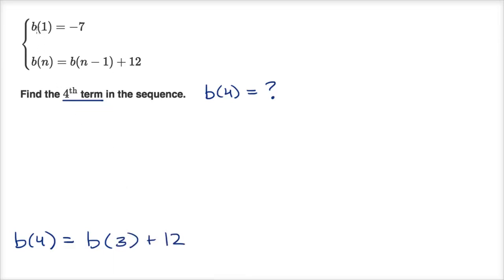All I did is say we're not immediately trying to figure out what b(1) is. We're trying to figure out what b(4) is. So n equals four, meaning b(4) is going to equal b(4-1), or b(3), plus 12.